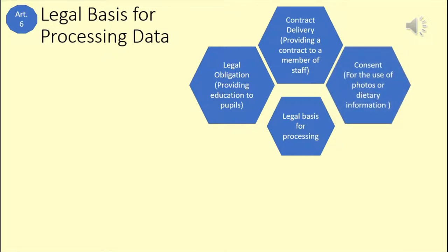Consent is the third of these three main legal bases for schools to process data. Consent has its own training video, but in brief, consent is gathered from the data subject when the school wants to process data that it has no other legal basis to process. An example here might be the photo of a child that the school would like to put on its website. The processing of the photo is not part of the school's legal obligation to educate the child, and so the school must gather consent for the photo to be used on its website.